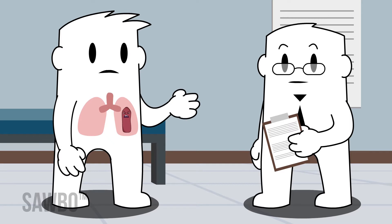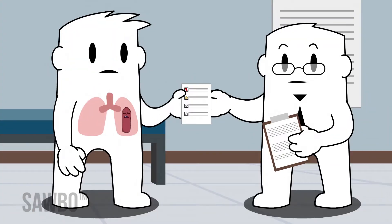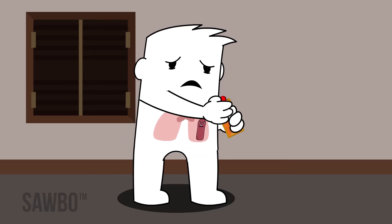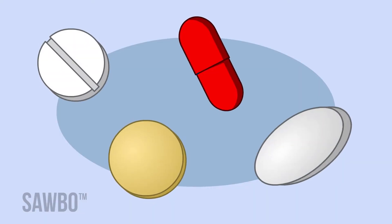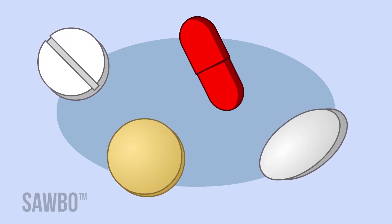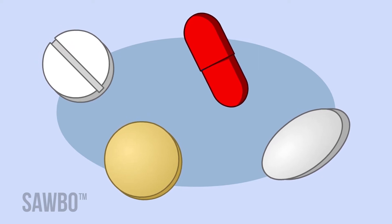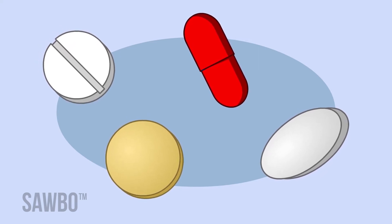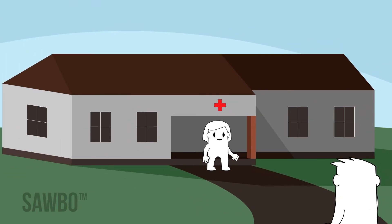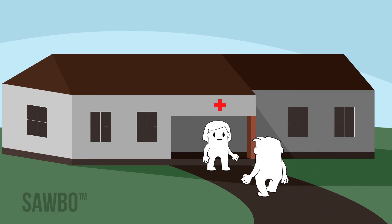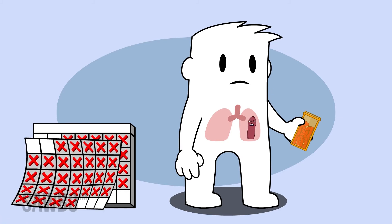If TB is detected, either latent or active, you will want to be placed on a TB antibiotic treatment plan. This involves taking medicine daily and is the best way to keep your TB from spreading. The most common treatment for drug-susceptible TB involves taking four antibiotics together. People with TB need to follow their doctor's instructions and never skip any prescribed antibiotics. Sometimes it is best to place a person with active TB in a patient care center to minimize the spread of TB. The treatment period can last from three to nine months until all of the TB bacteria are eliminated.